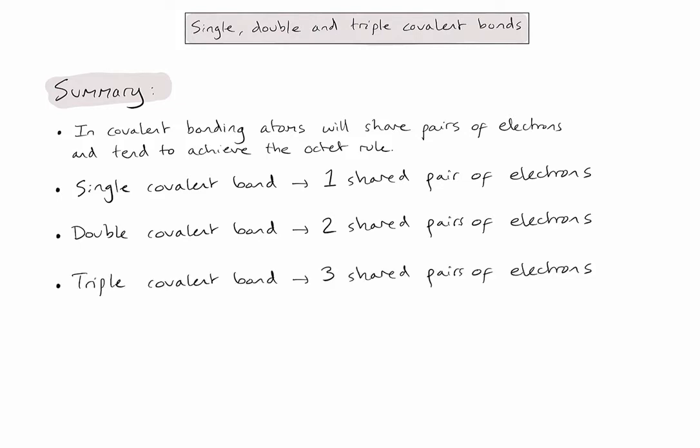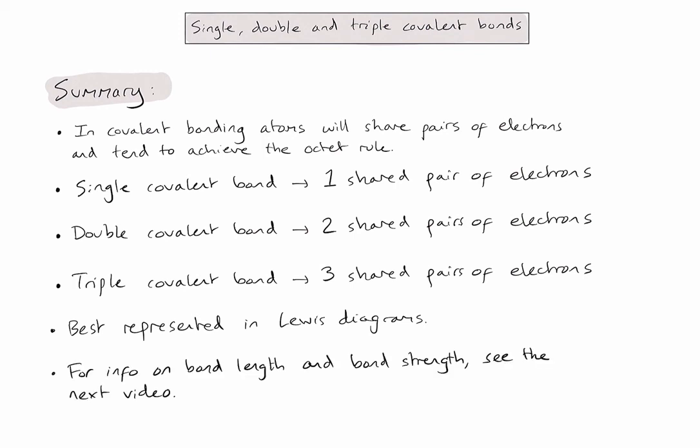In IB chemistry, you'll be required to represent these as Lewis diagrams, which are much clearer when dealing with complicated examples. For information on how this relates to bond length and bond strength, you'll want to see the next video in the playlist. Hopefully, this video has been of some help.